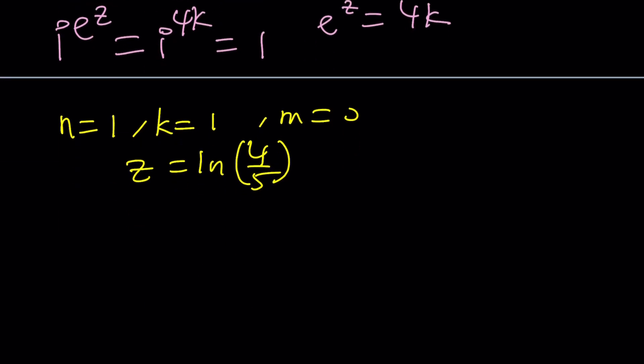Now if z is that, i to the e to the z is just going to be i to the power e to the z, which is just going to be 4 fifths. So the question is: is i to the power 4 fifths equal to 1? That's a good question, right?